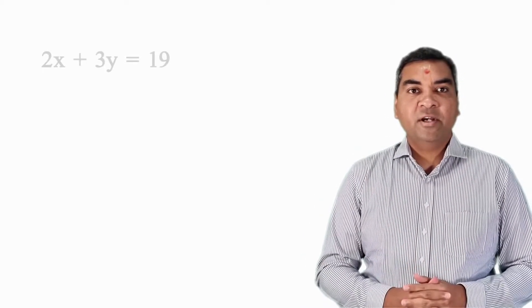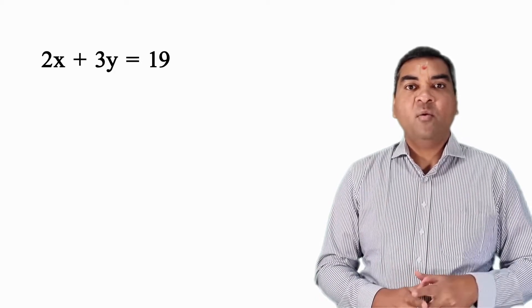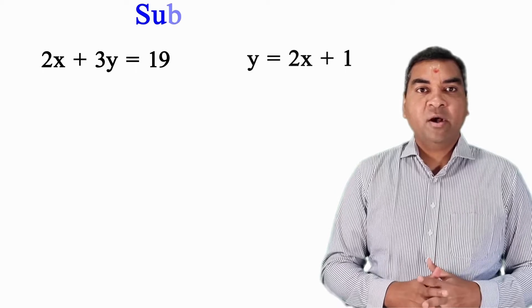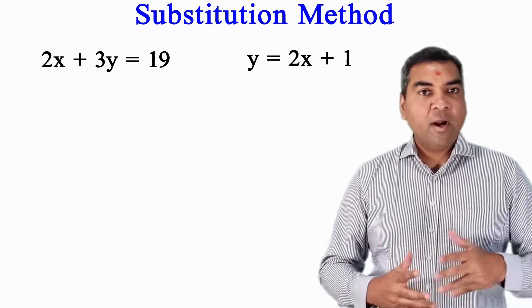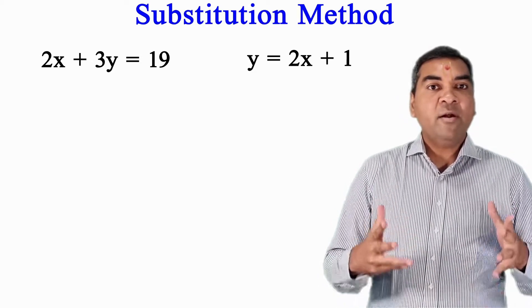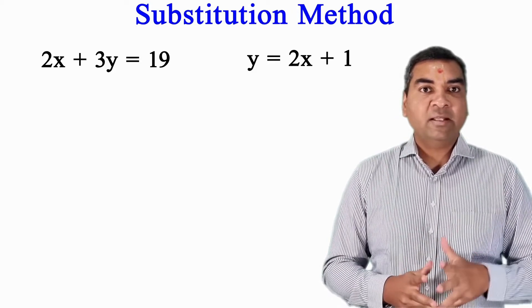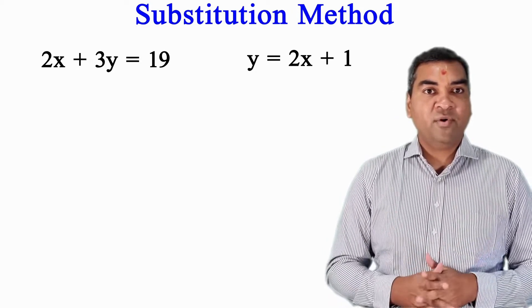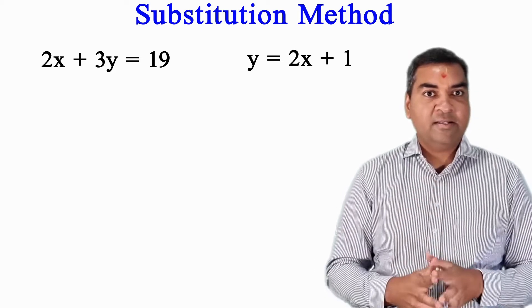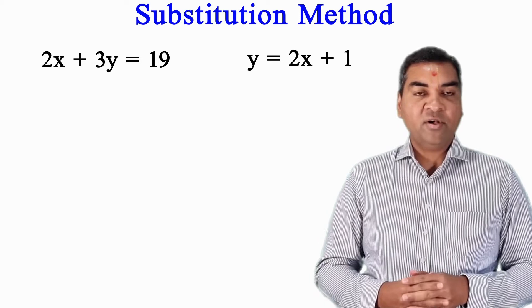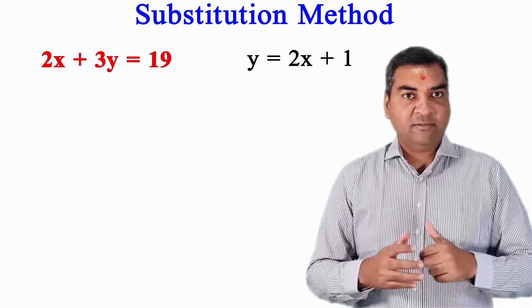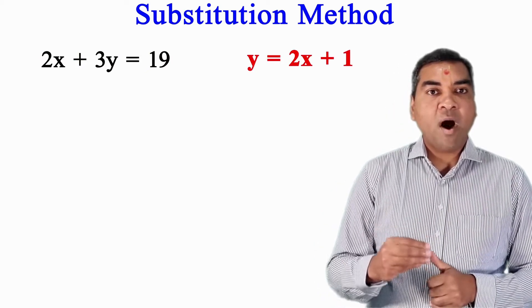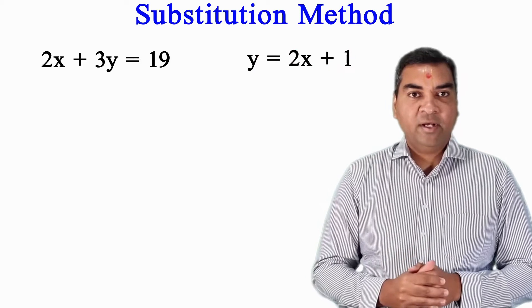Dear students, today I'm going to teach you how to solve two linear equations — 2x plus 3y equal to 19, and y equal to 2x plus 1 — by substitution method. This is going to be very crucial for your learning. It can help you solve higher-order thinking questions in primary school, and it is also a foundation for high school maths.